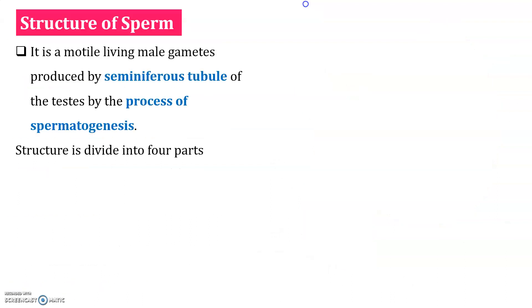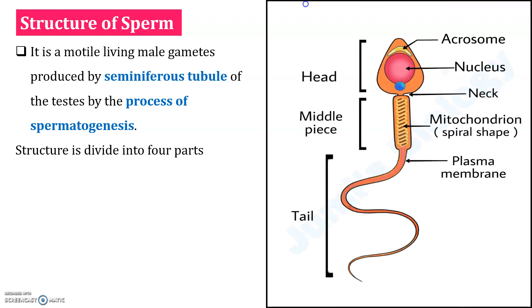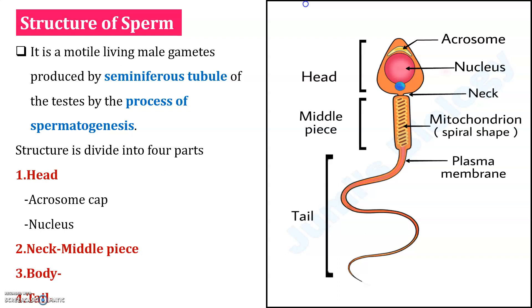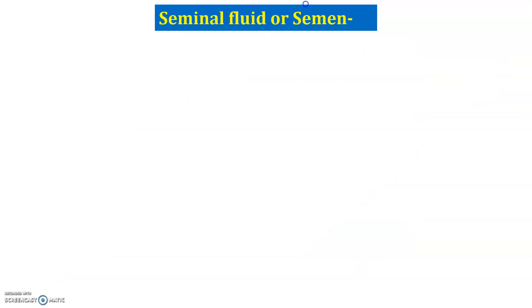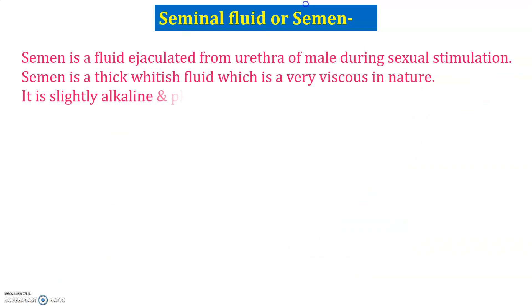What is the structure of sperm? The sperm is a living motile gamete containing the head, neck, body, and tail, formed by the process of spermatogenesis. What is semen or seminal fluid? Semen is the thick whitish fluid which is ejaculated from the urethra during sexual stimulation, having a slightly alkaline pH of about 7.4.